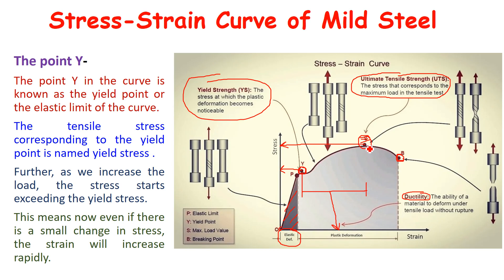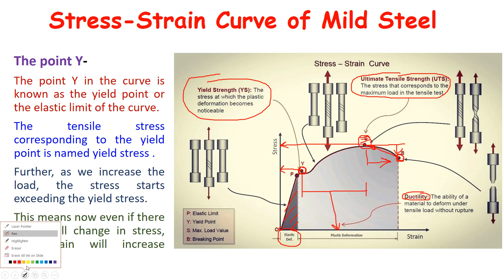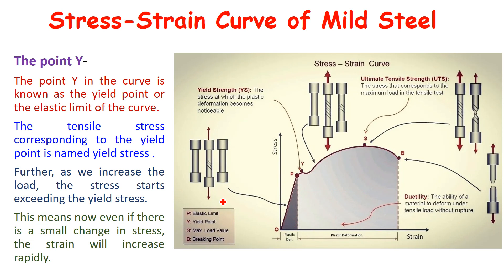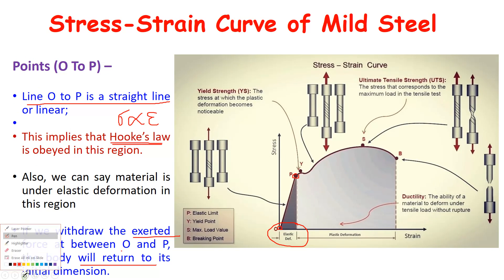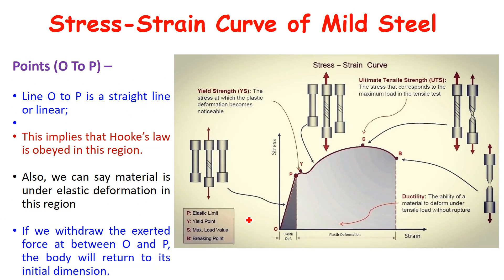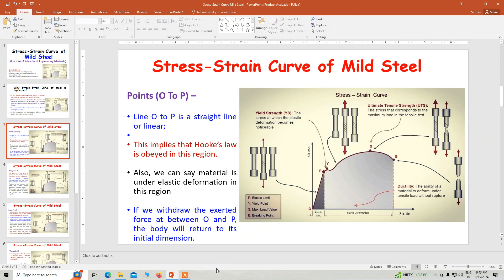Note that the breaking point B is below point S, meaning after S, stress decreases but strain increases. Also, if S point and B point are very close to each other, the material is brittle; if they are far away from each other, the material is ductile. This is the stress-strain curve of mild steel. I hope all of you have understood the fundamental concepts. In the next class, we will discuss the next topic of fundamentals of structural engineering. Thank you very much.